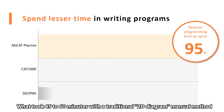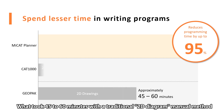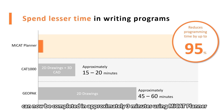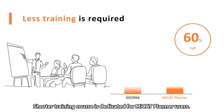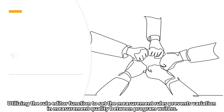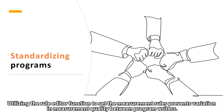What took 45–60 minutes with a traditional 2D diagram manual method, and 15–20 minutes with a 2D diagram plus 3D CAD method, can now be completed in approximately 3 minutes using Mikit Planner. A shorter training course is dedicated for Mikit Planner users, and utilizing the Rule Editor function to set measurement rules prevents variation in measurement quality between program writers.